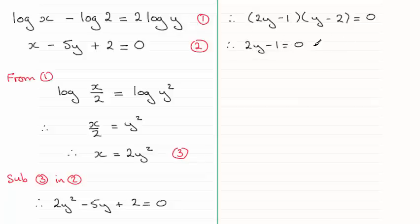So just put that in: two y minus one must equal zero, or y minus two must equal zero. And that leads to y equaling a half, or y equaling two.